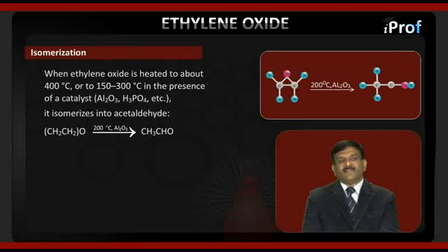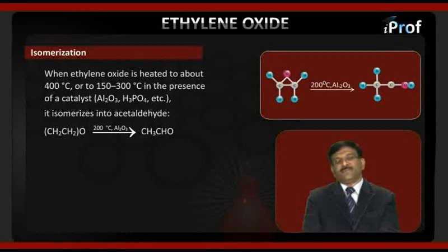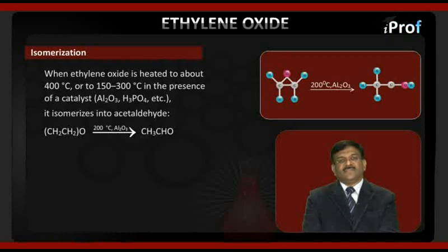The reaction is: C₂H₄O (ethylene oxide) in the presence of 200 degrees centigrade and alumina (Al₂O₃) gives C₂H₄O (acetaldehyde).